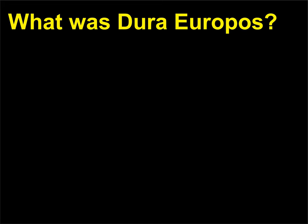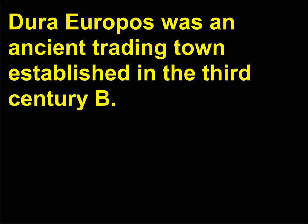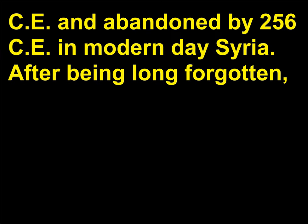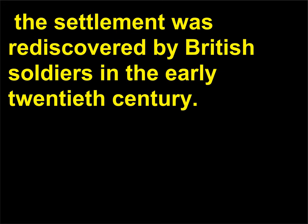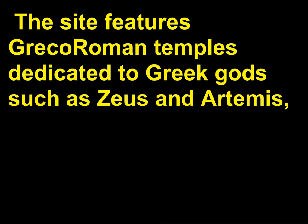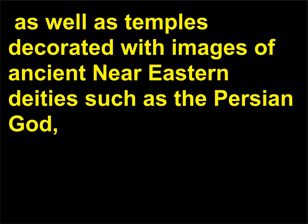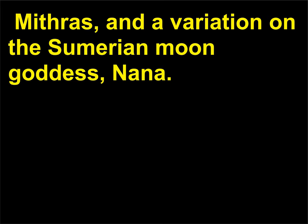What was Dura-Europos? Dura-Europos was an ancient trading town established in the 3rd century BCE and abandoned by 256 CE in modern-day Syria. After being long forgotten, the settlement was rediscovered by British soldiers in the early 20th century. The site features Greco-Roman temples dedicated to Greek gods such as Zeus and Artemis, as well as temples decorated with images of ancient Near Eastern deities such as the Persian god Mithra and a variation on the Sumerian moon goddess, Nana.